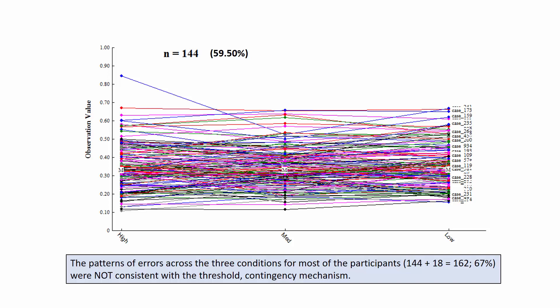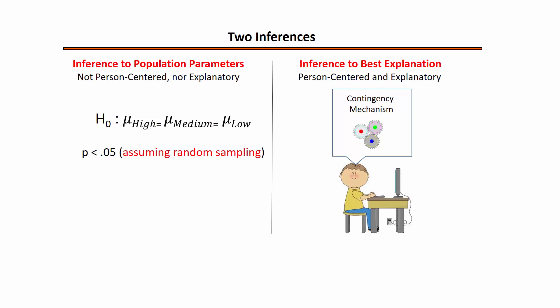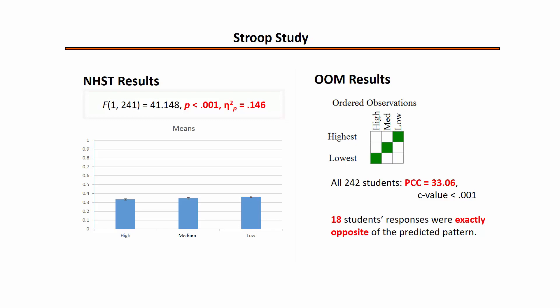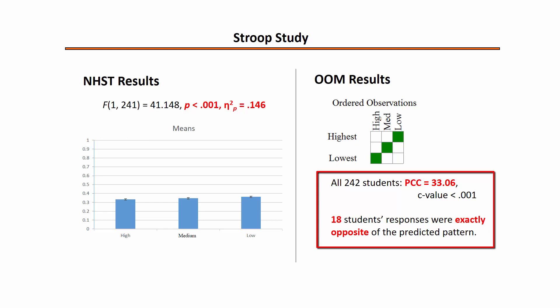Altogether, 162 participants — or 67% of the sample — yielded patterns of errors that failed to support the contingency mechanism. Again, this is not good news for the proposed mechanism. To summarize, we have two inferences to consider: the inference to population parameters and the inference to best explanation. The authors of the Stroop study were clearly seeking the inference to best explanation, because they were seeking to garner evidence for a general explanatory mechanism operating within the persons of their study. The significance test did not allow the researchers to evaluate this inference. What you want to know is how many people in the study behaved in a manner consistent with the inferred causal mechanism — and we gain that knowledge by avoiding the p-value and analyzing data using the OOM software.